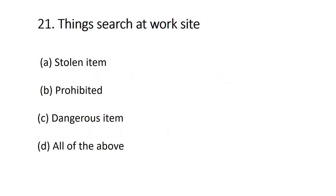Question number twenty-one: things to search at a work site — A) stolen item, B) prohibited item, C) dangerous item, D) all of the above. When on duty you must search for all three items. You should not let a person in with a dangerous item, or let a person out with a stolen or prohibited item. The correct answer is all of the above.